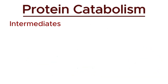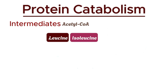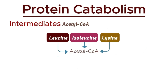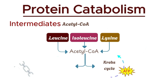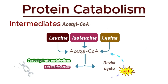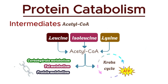Next, we have acetyl-CoA. Amino acids such as leucine, isoleucine, and lysine give rise to this crucial molecule. Acetyl-CoA is central to energy production as it fuels the Krebs cycle, generating ATP. It's also a key player in linking carbohydrate, fat, and protein metabolism.